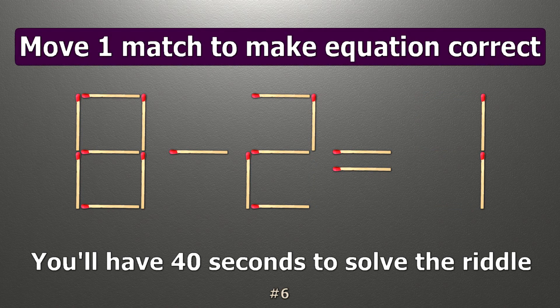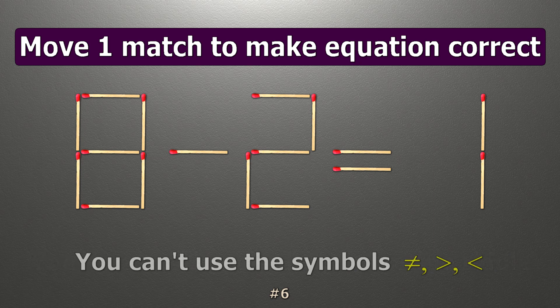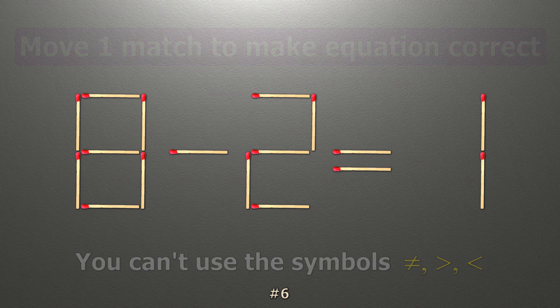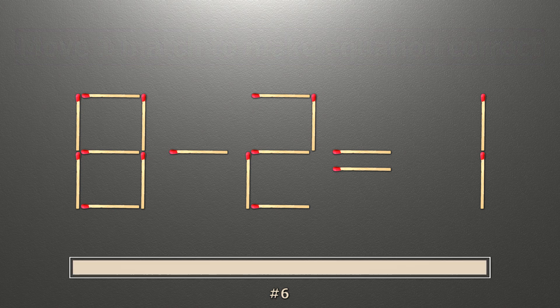We have the equality 8 minus 2 equals 1. Our equality is wrong. We need to move 1 match to make our equality correct.